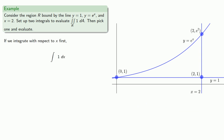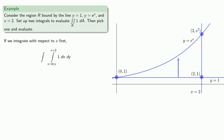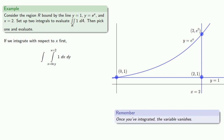If we integrate with respect to x first and let x vary, x goes from the graph of y equals e to the x to x equals 2. The differential variable is controlling, so we need to express both limits as x equals something. We solve y equals e to the x for x and get x equals log y, so our limits run from x equals log y to x equals 2. Then we let y vary; y goes from y equals 1 up to y equals e squared.